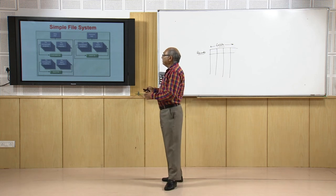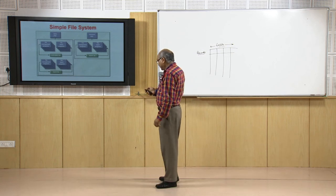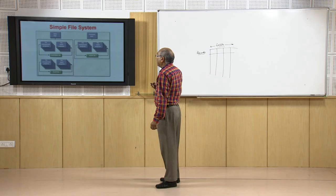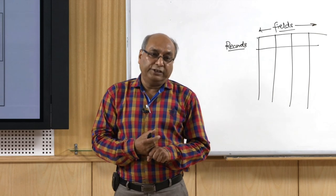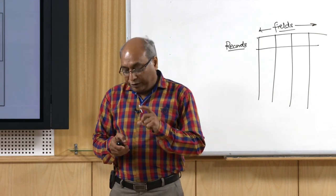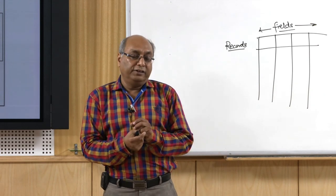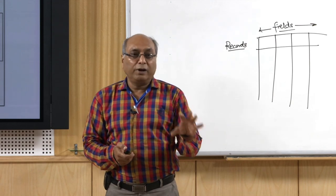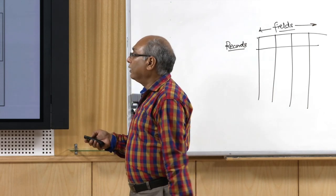In a file system, looking at a sales scenario, things are kept completely separately and there are hardly any linkages. There is a customer file, an accounts department, a sales department with customer and sales files, and a personnel department with agent files. Information exists within the organization but is lying in isolation. When we want to retrieve information from one section or department to another, integration is not possible. Retrieval of information from one department to another is not possible if data has not been organized in a proper database — if it is in a file system, this is what happens.